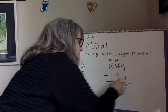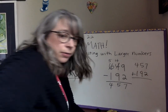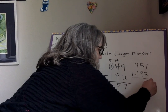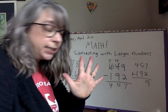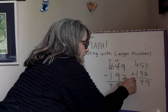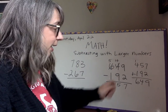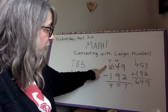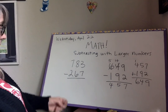We can check by adding: four hundred and fifty-seven plus one hundred and ninety-two. Seven plus five is twelve, carry one. Five plus nine plus one is fifteen, carry one. Four plus one plus one is six. So our answer is six hundred and forty-nine — we are correct. Six hundred and forty-nine minus one hundred and ninety-two is four hundred and fifty-seven.